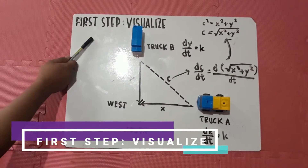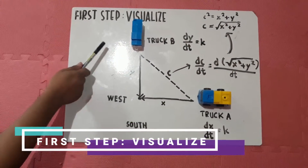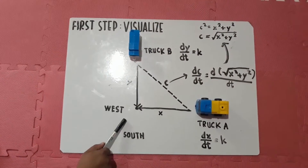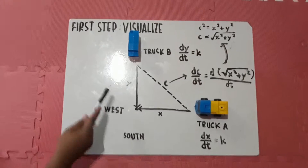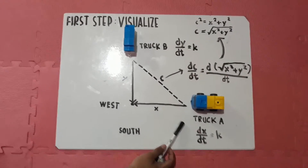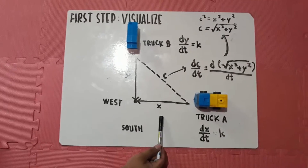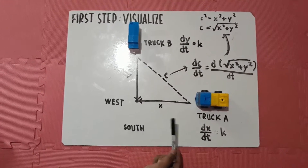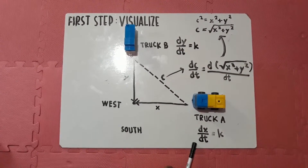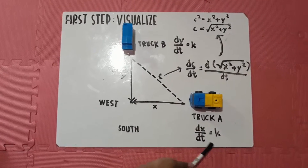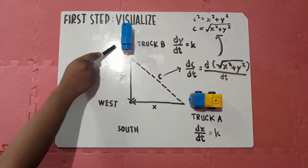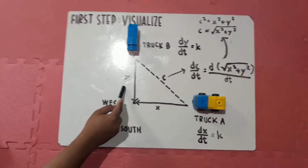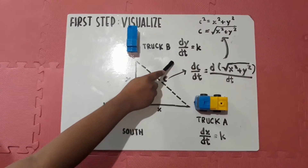Our first step is to visualize what the problem is stating. As stated in the problem, there are two trucks. One truck is traveling to the west while the other truck is traveling to the south. Truck A is the one traveling to the west and since it is lying on the x-axis, its derivative is dx over dt, which equals K. The rate of approach for truck B, which is traveling to the south, lies on the y-axis, so its derivative is dy over dt, which also equals K.